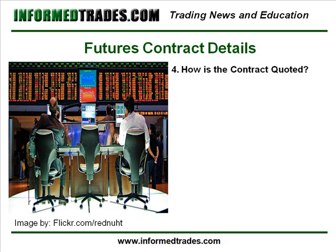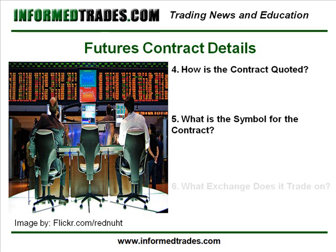The last two components we will want to know about the futures contract we are trading are the contract symbol and exchange that the contract trades on. Like the ticker symbol for a stock, each futures contract is identified by a symbol, which includes a letter and a number denoting the month and year for that contract. While there are over 70 futures markets worldwide, the main futures markets here in the United States are the Chicago Mercantile Exchange, the Chicago Board of Trade, the New York Mercantile Exchange, and the New York Board of Trade. I have included a link to a list of the details we've just discussed for most of the major futures contracts, which you can find below this video on InformedTrades.